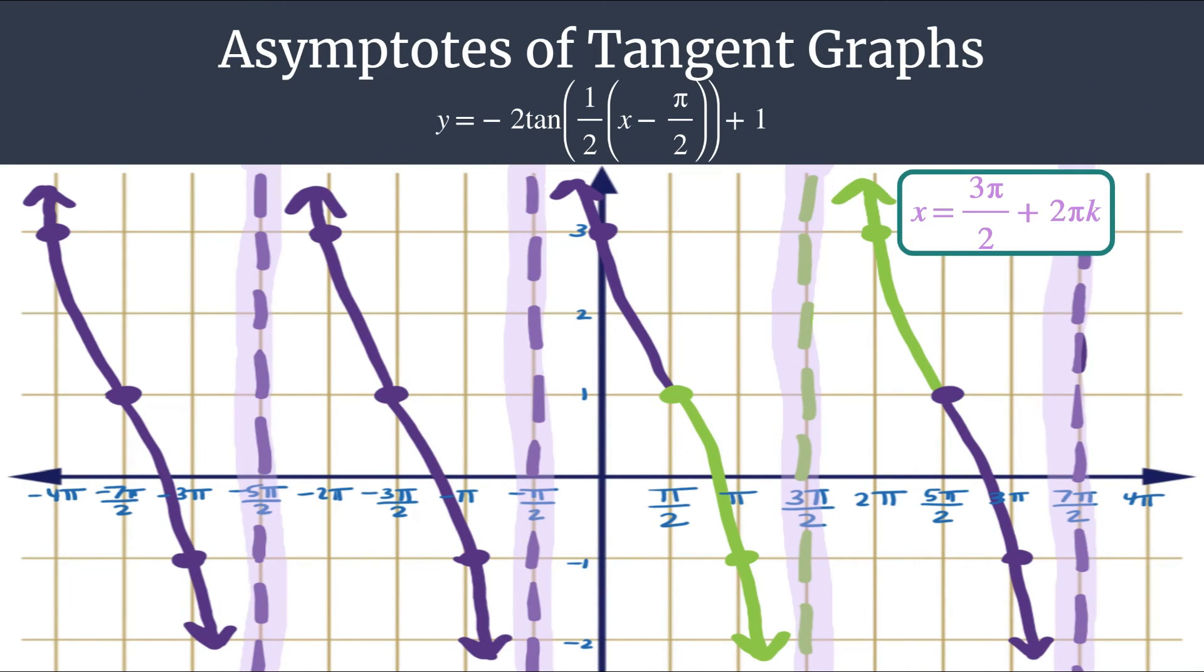Okay, so notice that we have the asymptotes here. So we have the k equals 0 asymptote, that was at 3 pi over 2. k equals 1 asymptote, we said 7 pi over 2. And k equals negative 1 was the negative pi over 2.